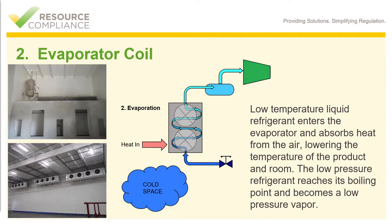The two pictures on this slide represent the two most common types of coils in cold storages. The top picture is a bunker style coil, and the bottom picture shows three ceiling-hung evaporative coils.